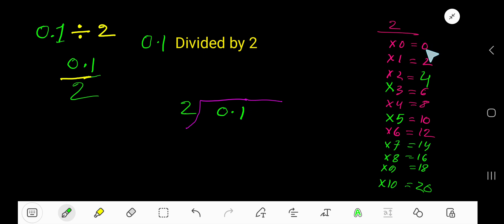How many times? 2 goes into 0, 0 times. Right? 0. Then 0 times 2 is 0. If you subtract, you will get 0. Now bring down this 1. Before this 1 there is a decimal. The decimal must come to the quotient directly.